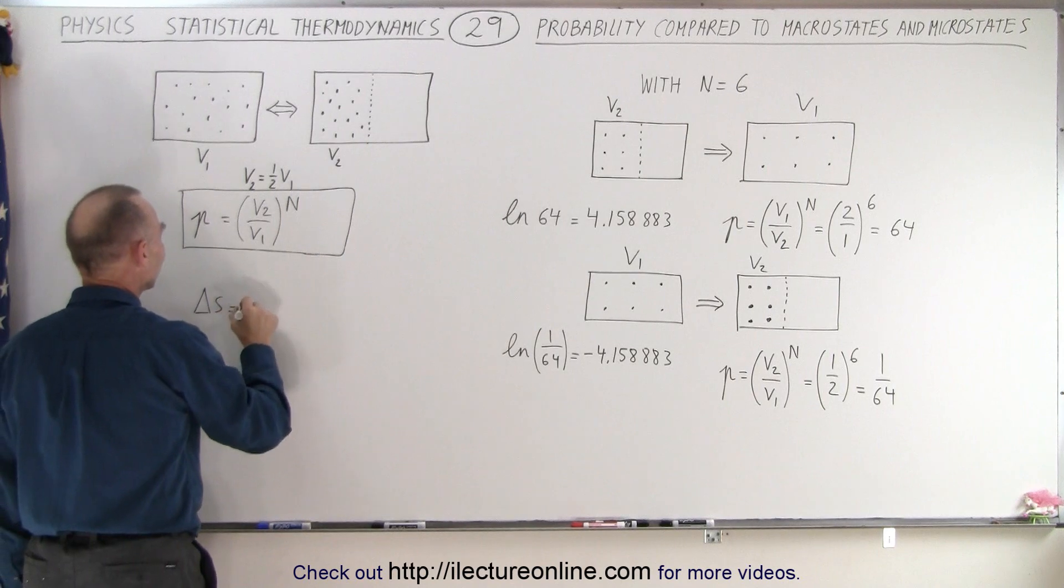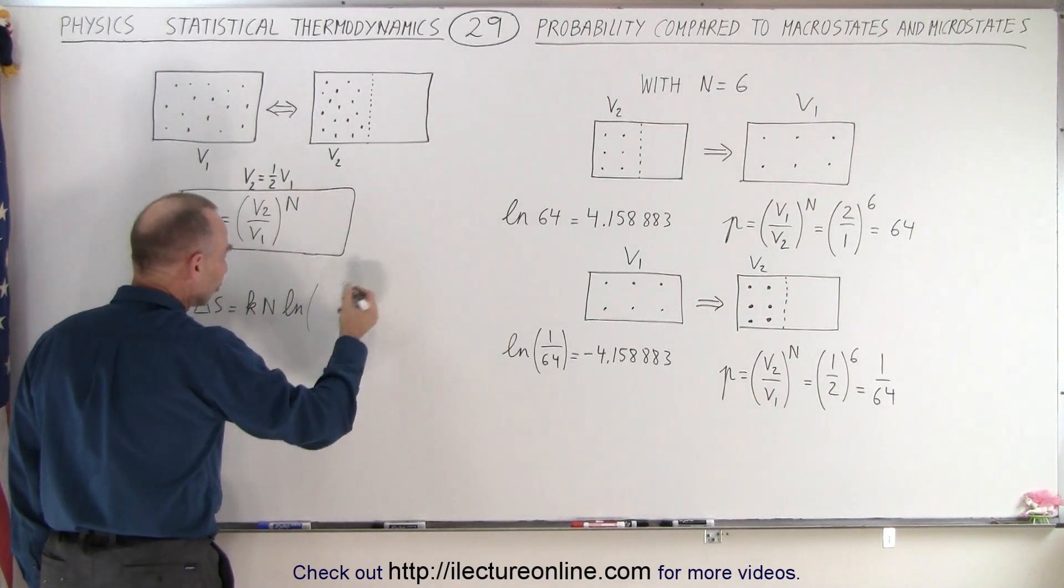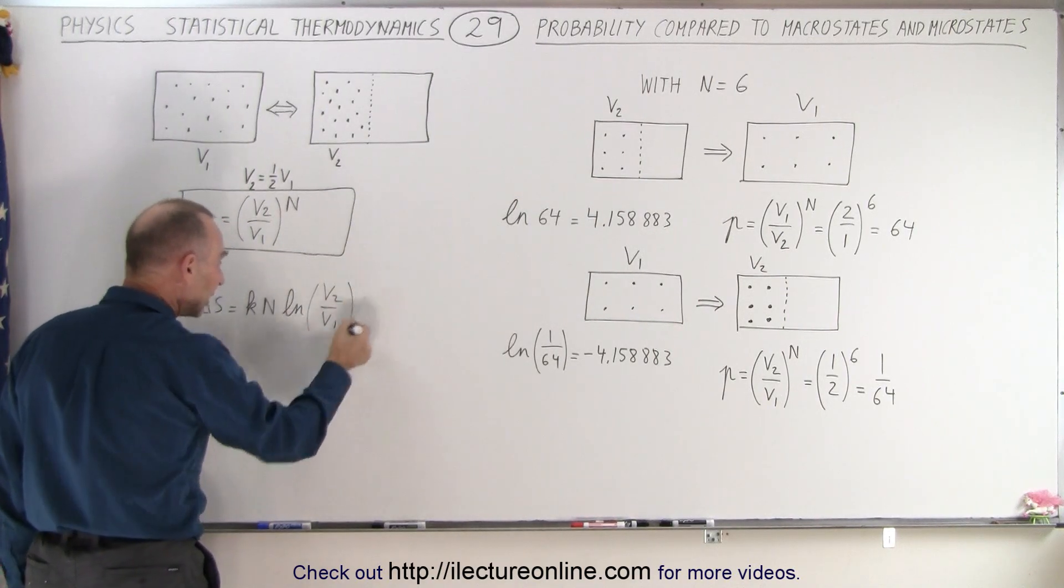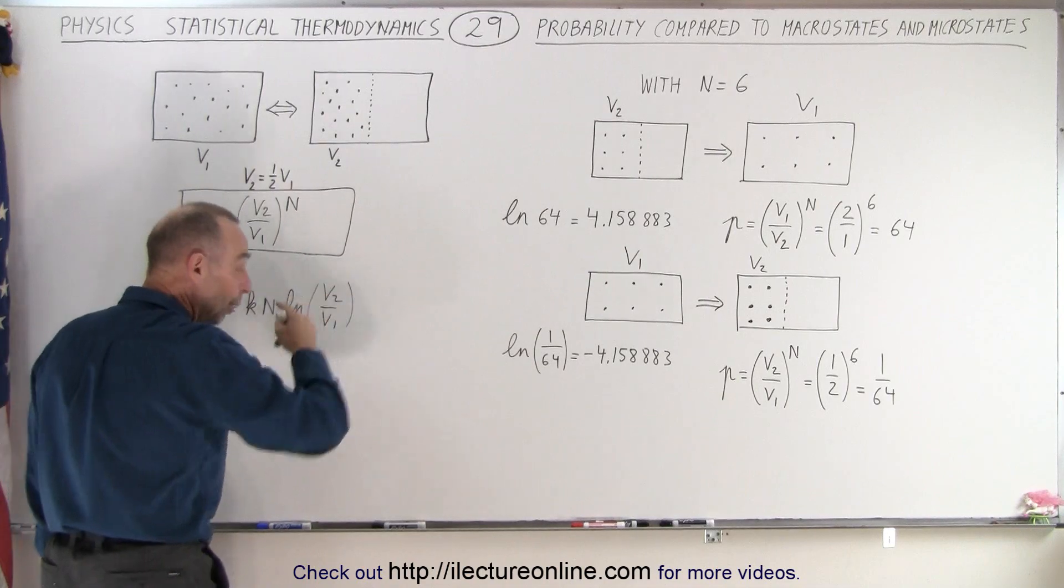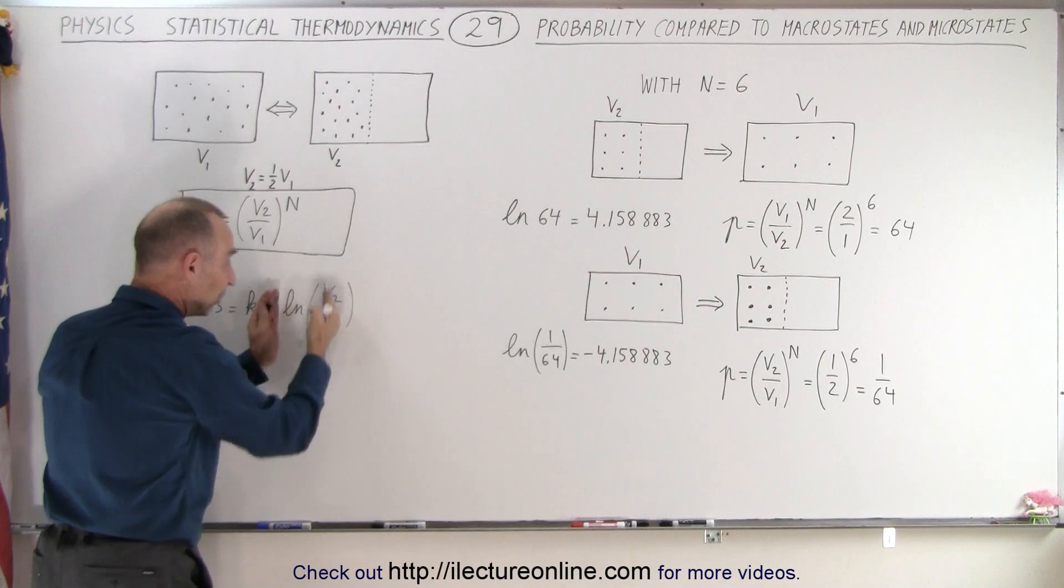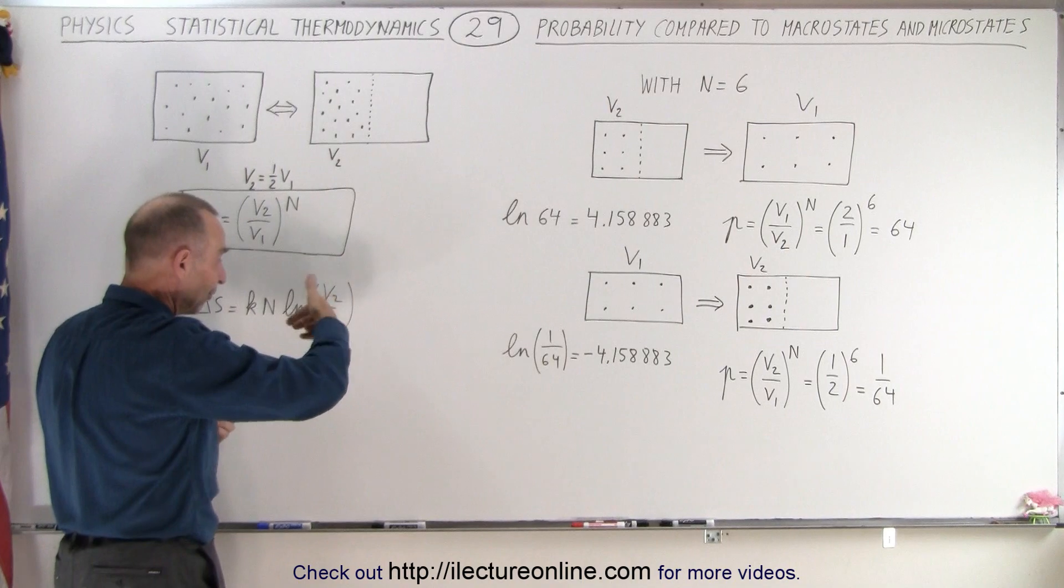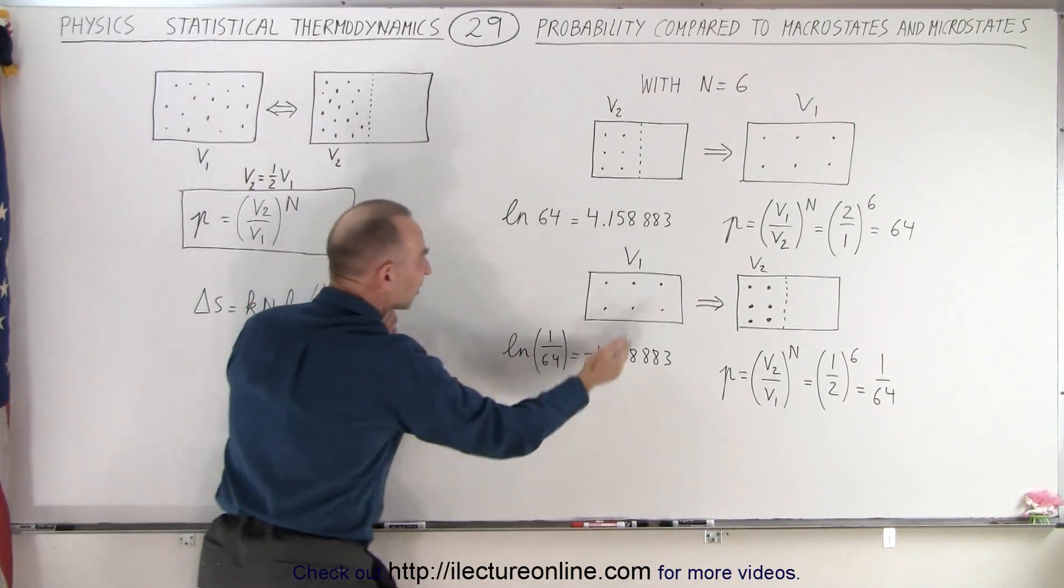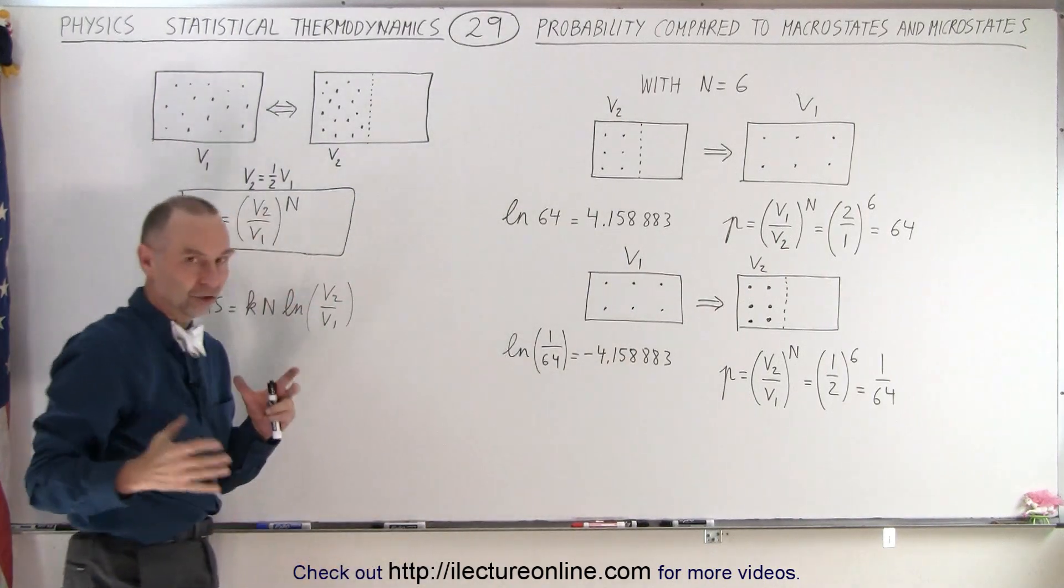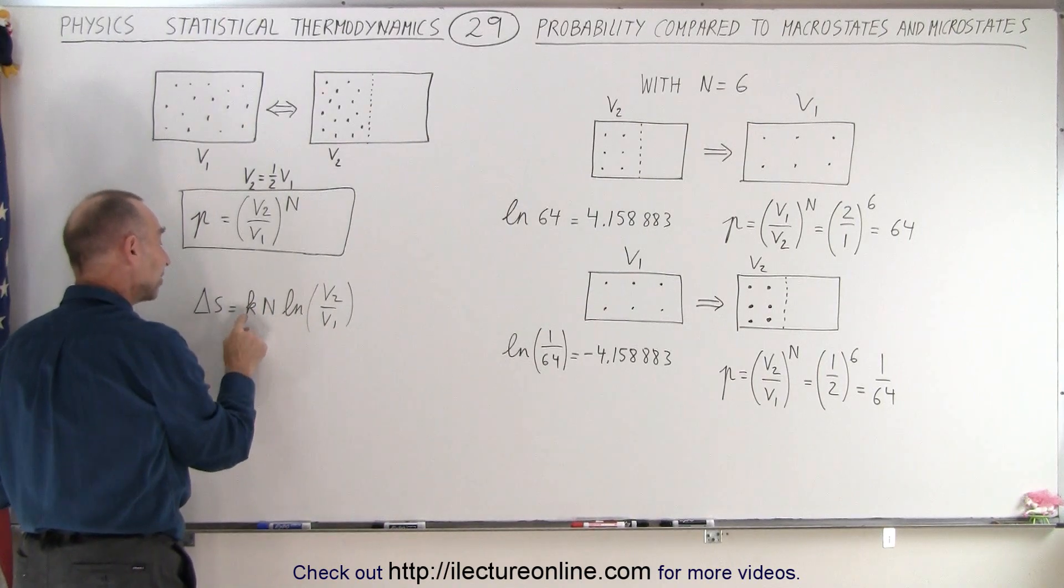So the change in entropy is equal to K times N times the natural log of the ratio of V2 over V1 or V1 over V2. So notice that this quantity right here, depending upon which way it goes, is it V2 over V1 or V1 over V2. This, if the ratios are the same, in other words, if one is double the other side, and we reverse the order, that will always give us the same number, but with a positive or a negative sign.